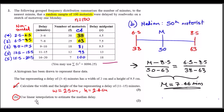For part (b), use linear interpolation to estimate the median delay. To find the median using interpolation, the keyword is median — the middle person. With 100 motorists, the middle person is the 50th (or technically 50.5th, but 50 is fine).